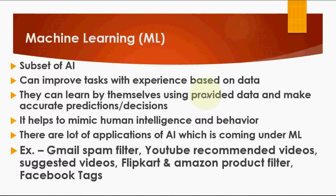Machine Learning systems can learn by themselves using provided data and make accurate predictions and decisions. If data is provided in a good manner, it will produce good results; if not, it will produce garbage results. It helps to mimic human intelligence and behavior. There are many applications of AI under ML — for example: Gmail spam filter, YouTube recommended videos, Flipkart/Amazon product filter, and Facebook tags.